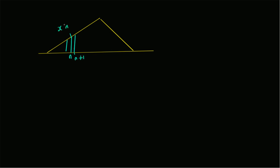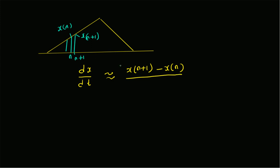For example, let point n and point n+1 be two consecutive discrete samples. The derivative dx/dt is approximately given by x(n+1) minus x(n) divided by the gap between the two values, which is 1 times the sampling length h — where h equals delta_t, the sampling interval.